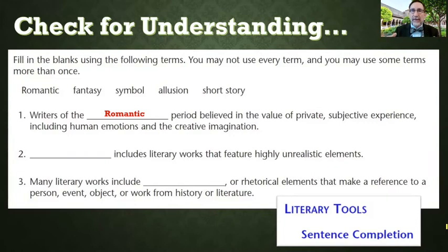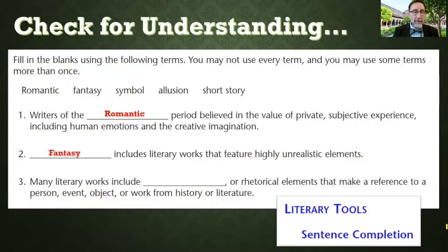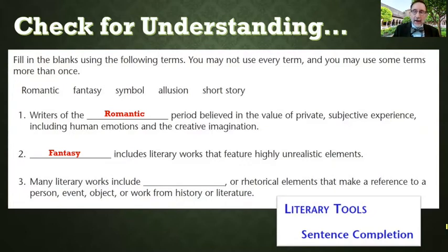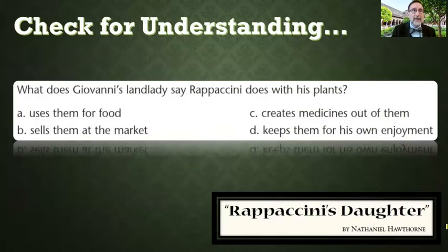What includes literary works that feature highly unrealistic elements? That would be a fantasy — and I told you Rappaccini's Daughter is one of these. And then: many literary works include elements that make a reference to a person, event, object, or work from history or literature — the better answer for that would be allusion, not symbol, because of the idea that it references things your reader should already understand. If your reader doesn't understand the allusion, it doesn't work. Then for multiple choice: in the story, Giovanni is our main character — our protagonist — and the landlady says that Rappaccini makes medicines out of his plants.